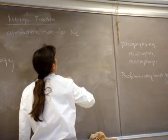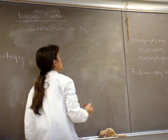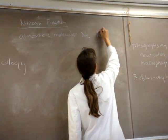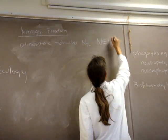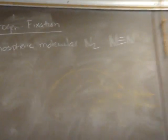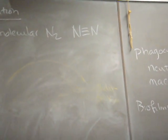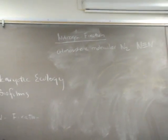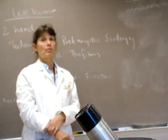So molecular nitrogen, it's two nitrogen atoms, and they're held together. You've got a triple covalent bond here, and that triple covalent bond, it's so hard to break. Very few organisms have the enzyme to break that triple covalent bond.